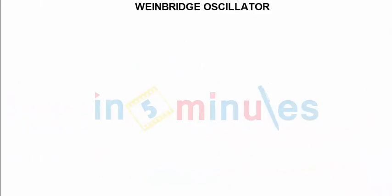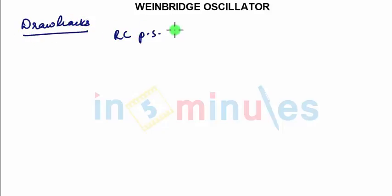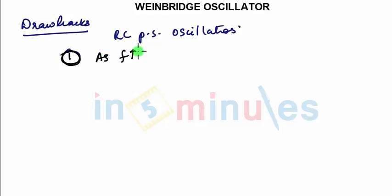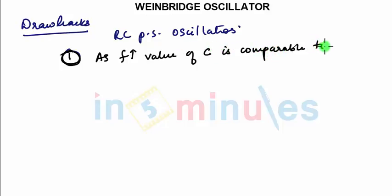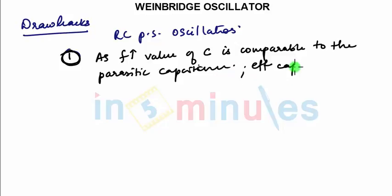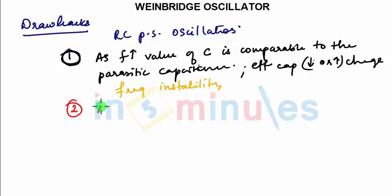Now considering the drawbacks, or why we do not use the RC phase shift oscillator for high frequency. First point: RC oscillators are used for low frequency applications. As frequency increases, the value of capacitance becomes comparable to the parasitic capacitance, causing the effective capacitance to change.